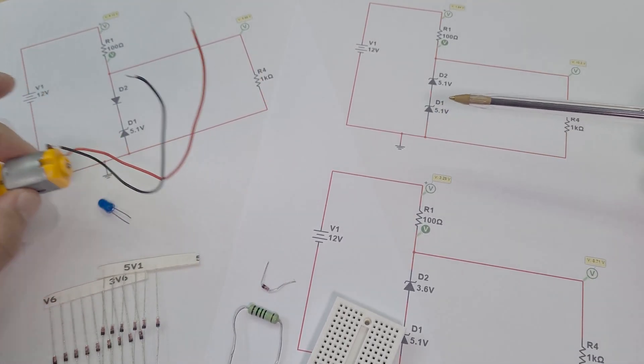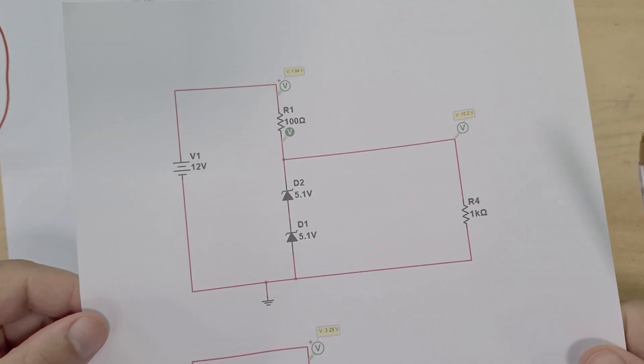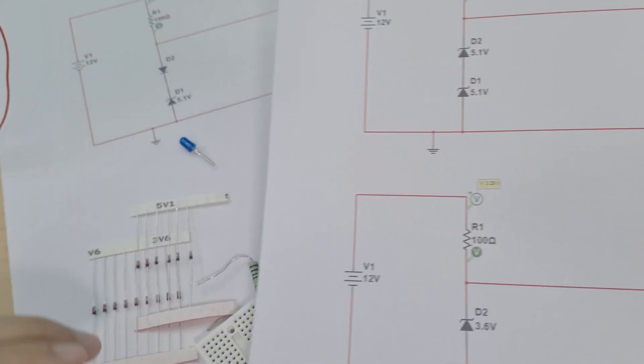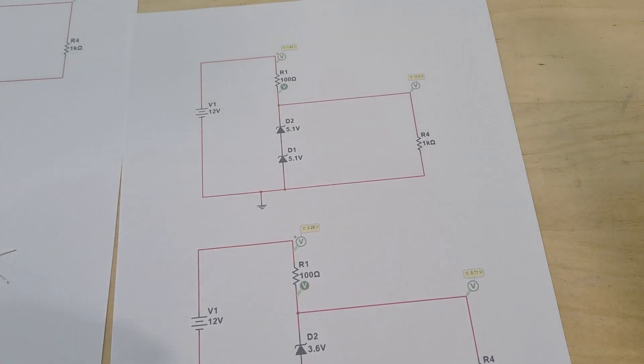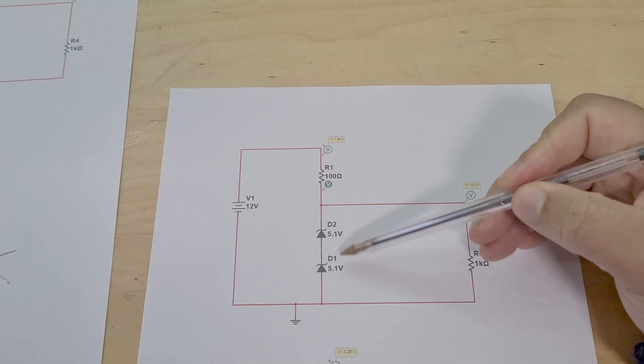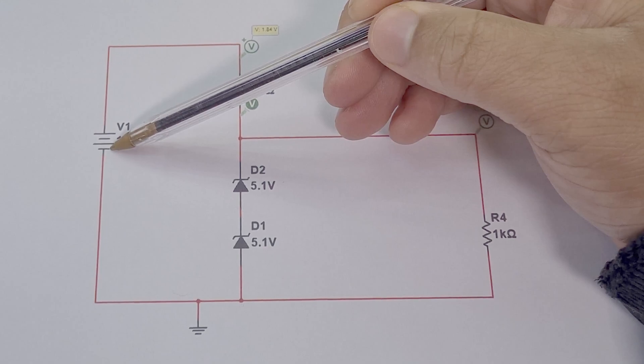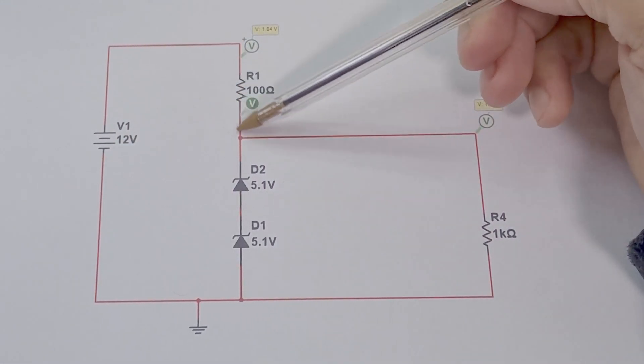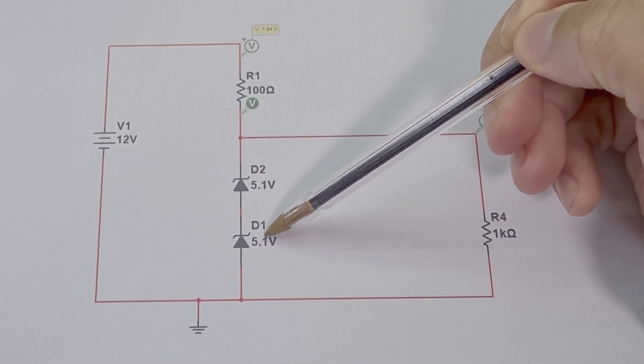So what we're going to do now in this video is we're actually going to combine Zener diodes so that we can get a customized output voltage. So the way that this works is if I show you, let's start here first and foremost. So if we look here, we've got two 5.1 volt Zener diodes in series together. So I've got a 12 volt supply and then it drops across this 100 ohm resistor and then comes now to these two Zener diodes.